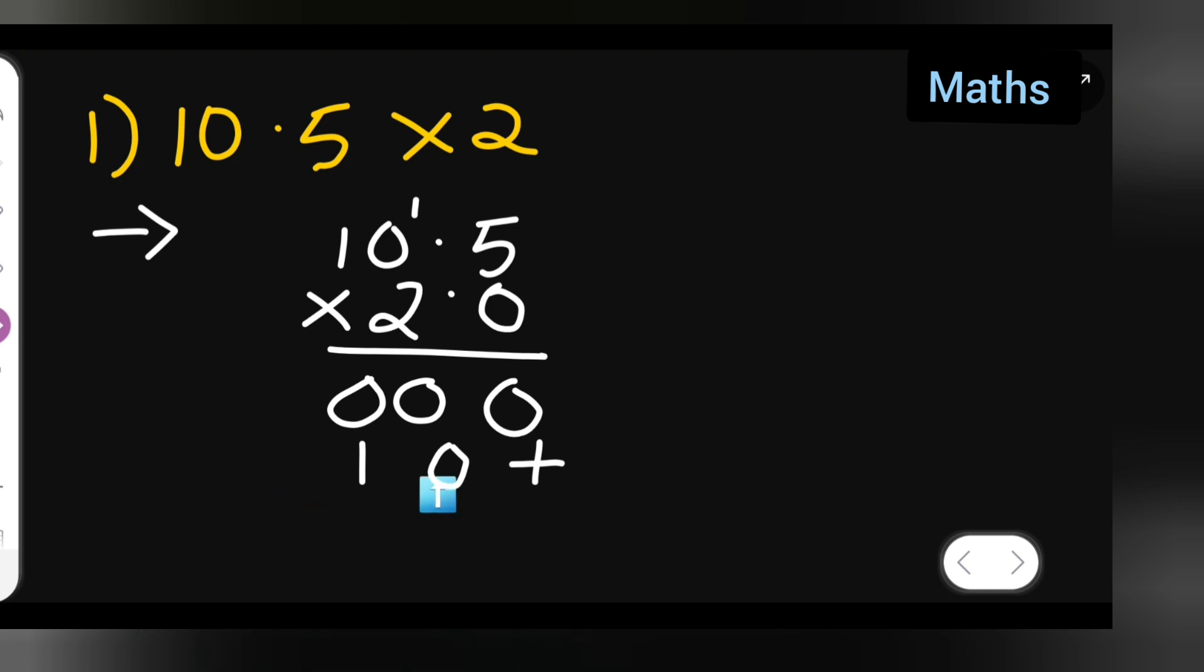Write 2 over here. Now add these numbers: 0 plus 0 will be 0, 0 plus 0 will be 0, 0 plus 1 will be 1, and 2. The decimal point will come over here.